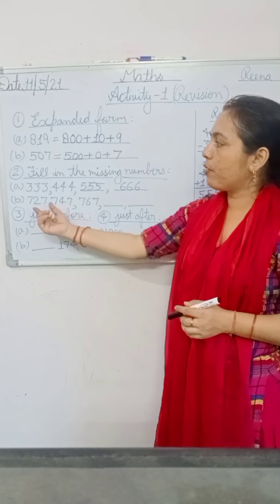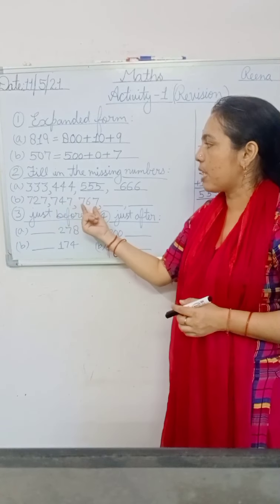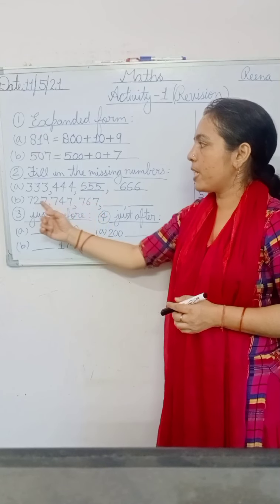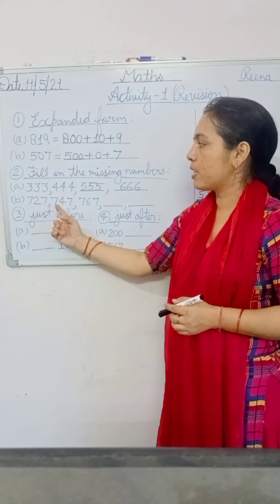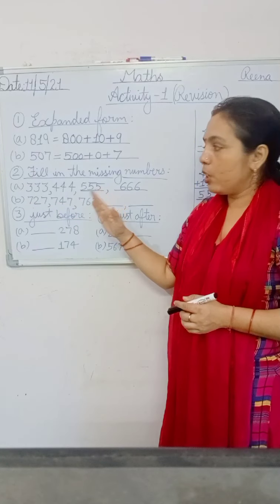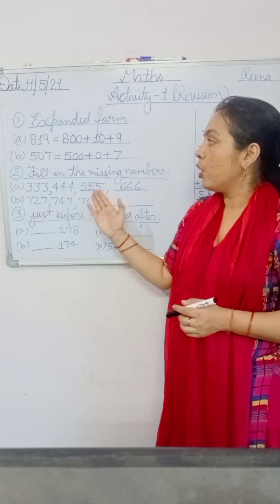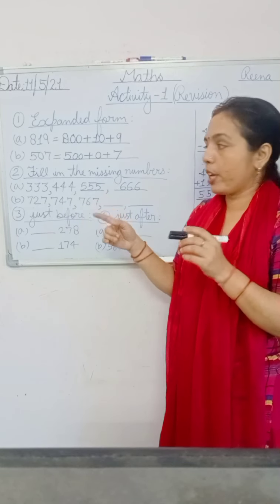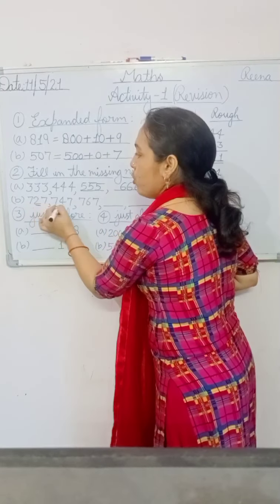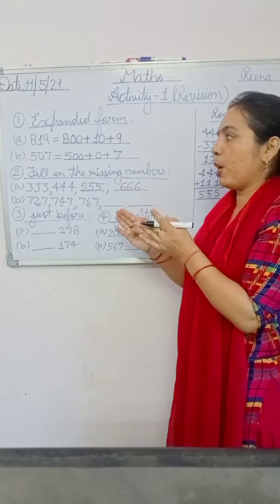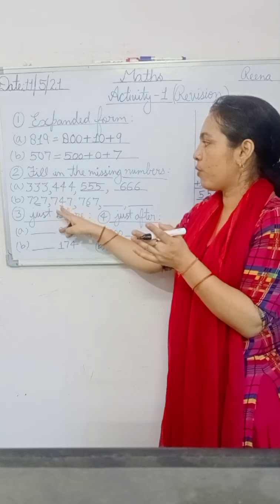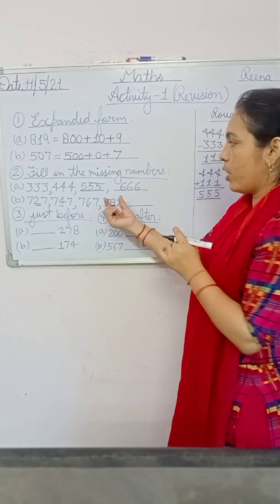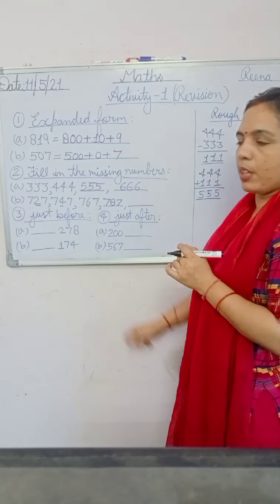For part B, you have 727, 747, 767. In these numbers, the ones place is the same and hundreds place is the same — seven, seven, seven. Only the tens place is changing: two, four, six. This follows the table of two — two, four, six. So the next tens digit is eight — two fours are eight.